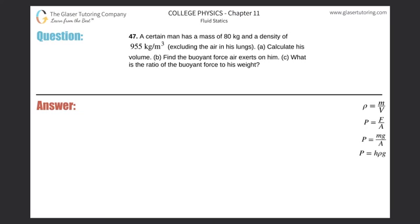Number 47. A certain man has a mass of 80 kilograms and a density of 955 kilogram per cubic meter, excluding the air in his lungs. Calculate his volume. Alright, so letter A, it says to calculate his volume.